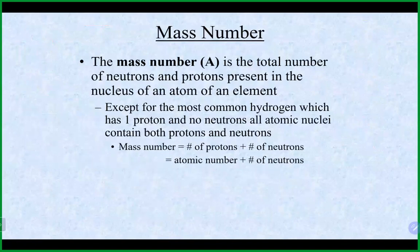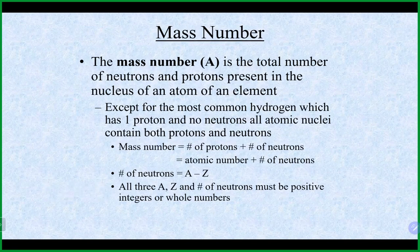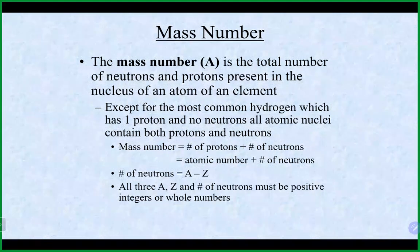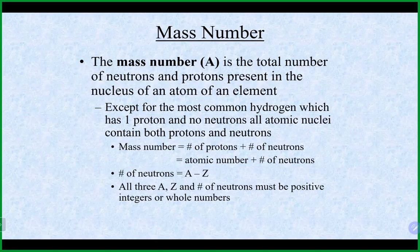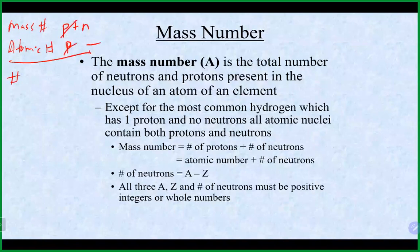Another important aspect of an atom is the mass number, sometimes abbreviated as A. It is the total number of neutrons and protons in an atom. Except for hydrogen, every element has protons, electrons, and neutrons — hydrogen only has a proton and electron with no neutron. If you take the mass number minus the atomic number, that gives you the number of neutrons.